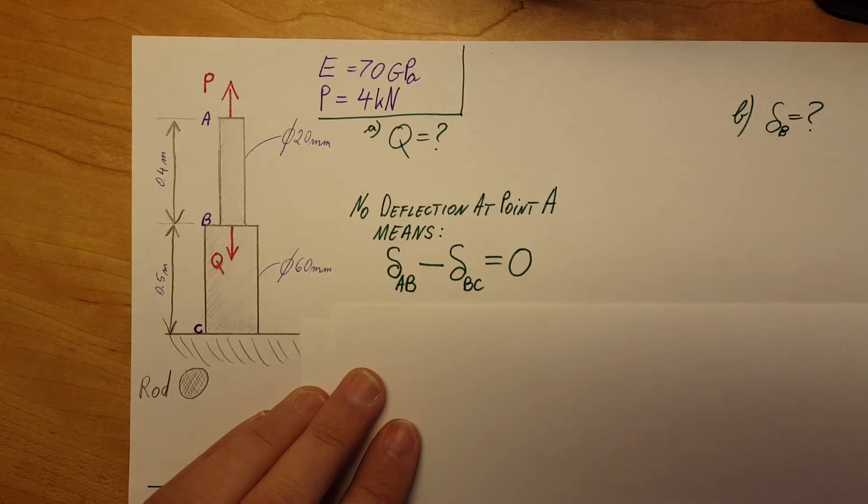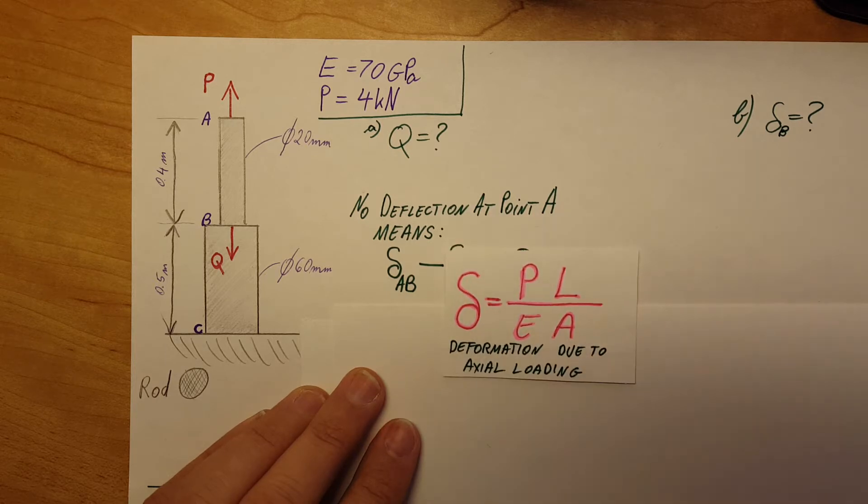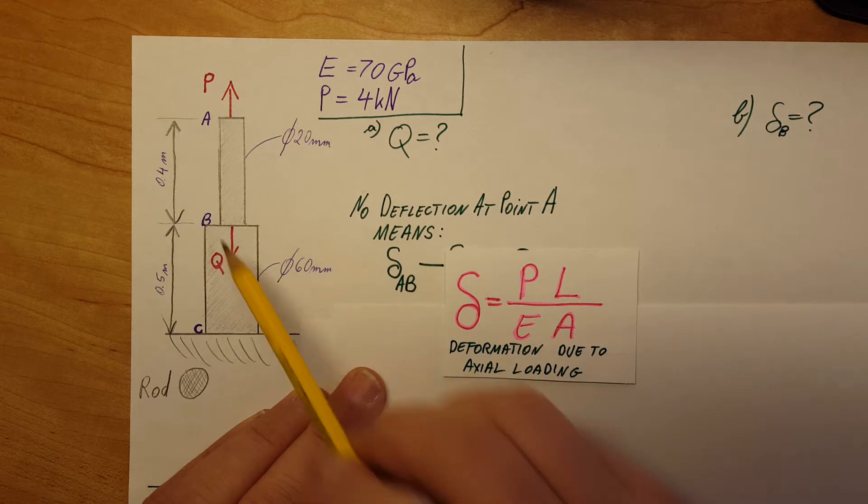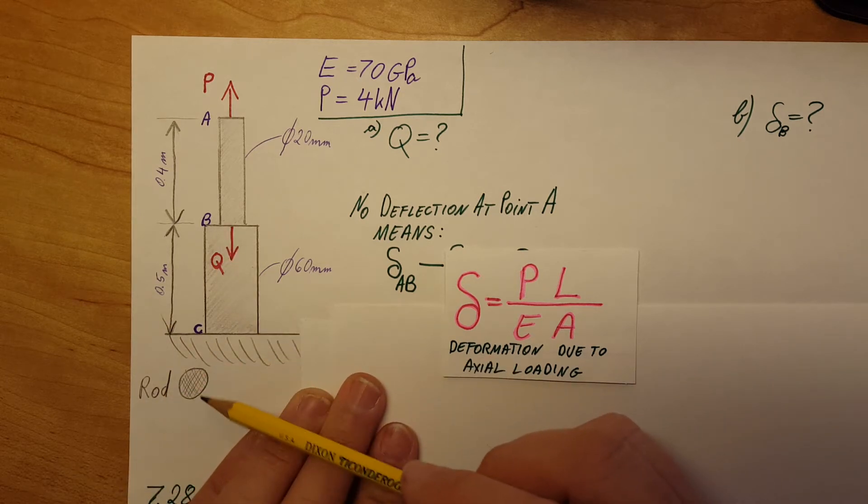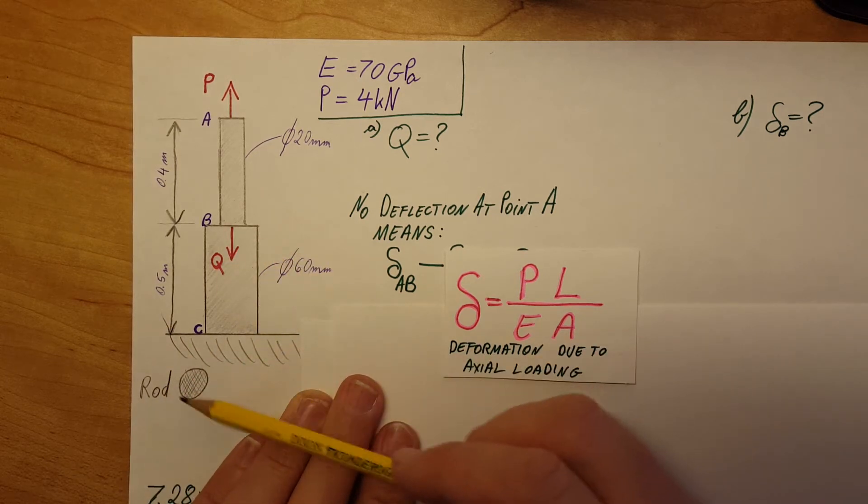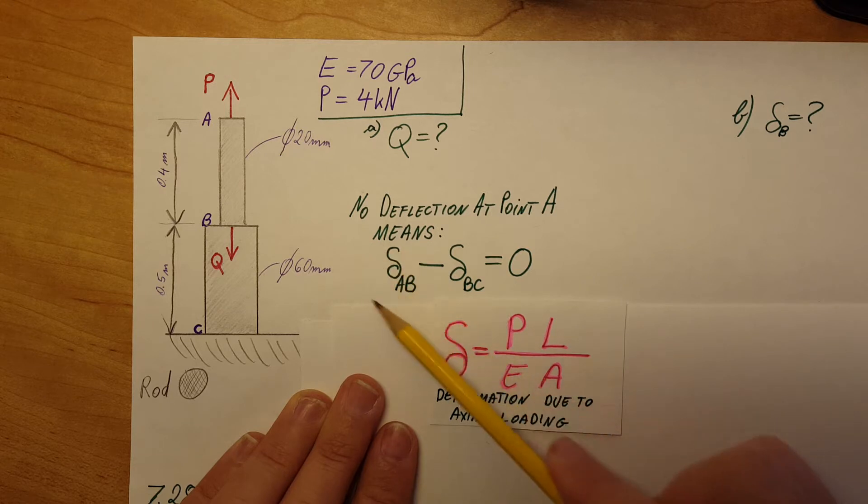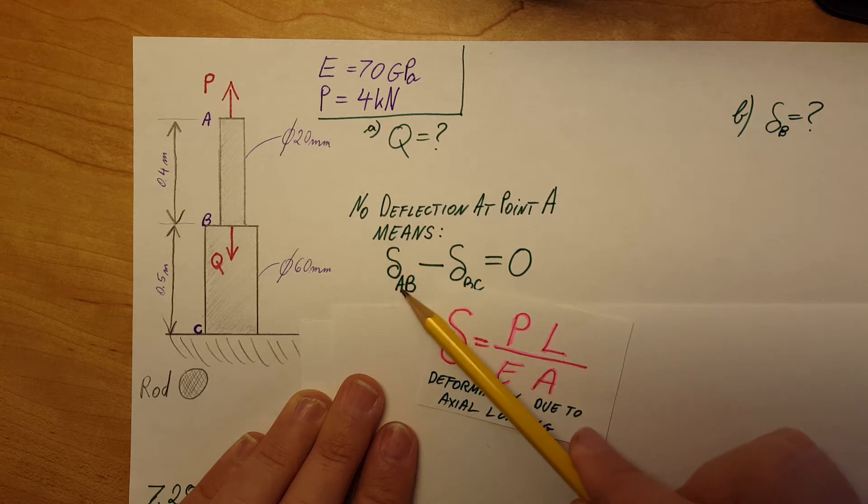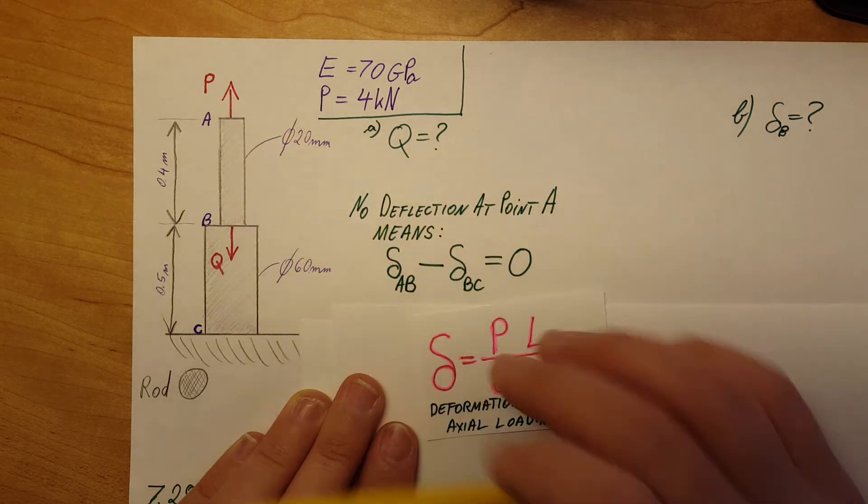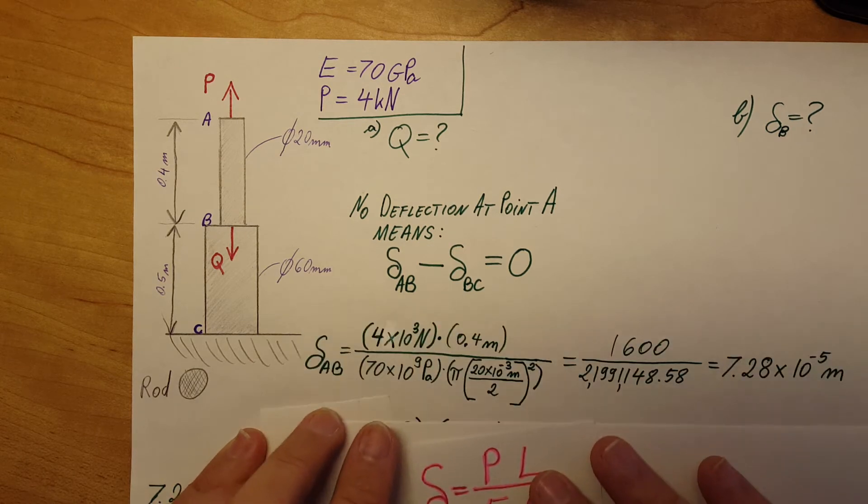We know that we are talking about deformation due to axial loading. Therefore, this is the formula: deformation equals force times length over E times cross-sectional area. These are rods, so the cross-sectional areas are circles. Let's start with the deformation in part AB.